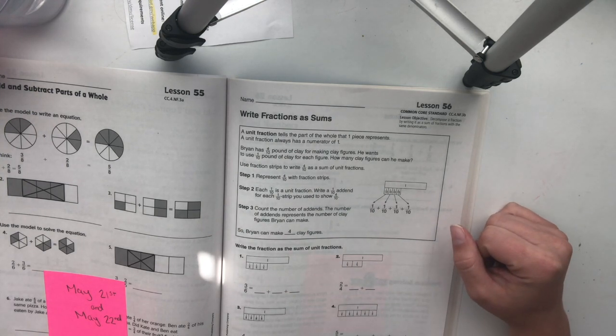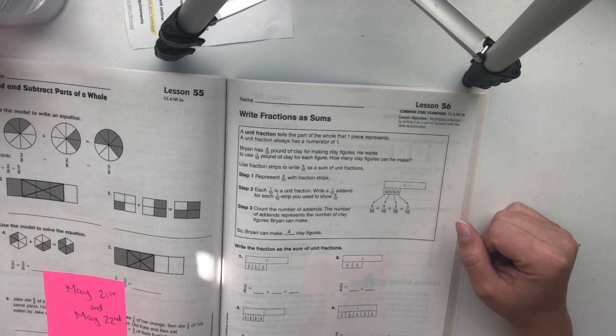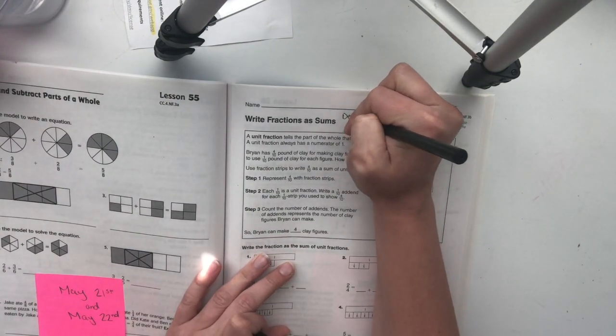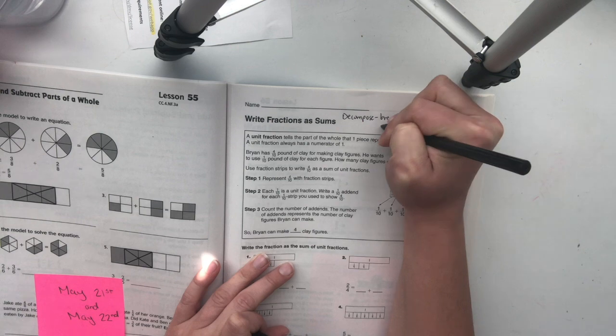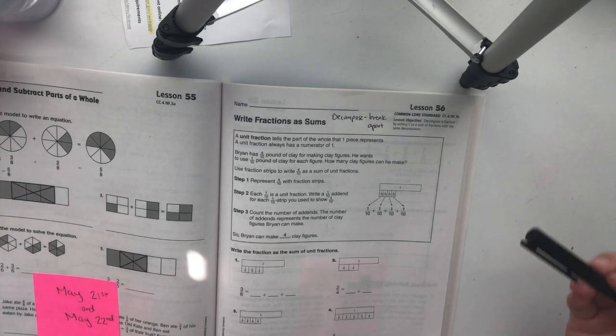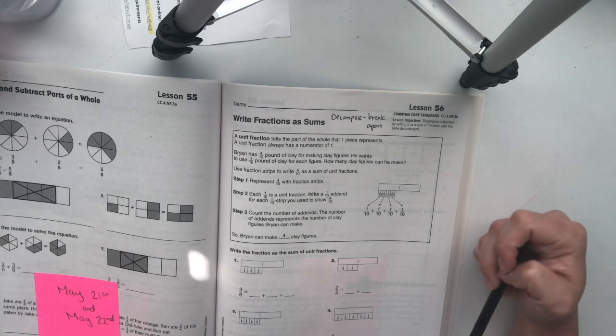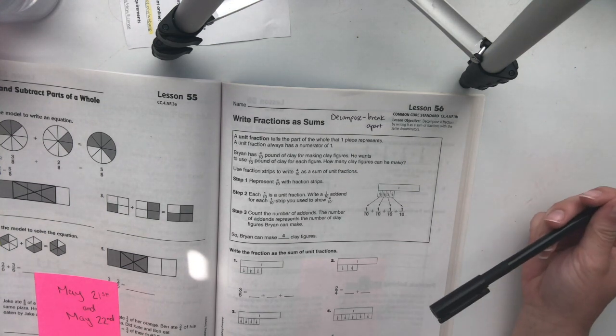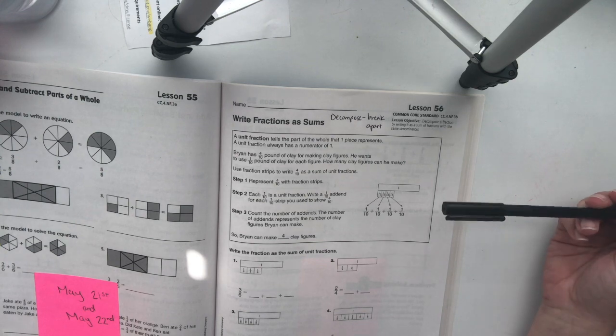So we're going to be starting learning about decomposing. And when you are decomposing something, that means that you are taking something and breaking it apart. So I'm going to write that down. Decompose, break apart. So that is really important for you to know moving forward with what we are going to be learning. So we're on lesson 56, page 111. And we are going to be decomposing fractions and we're going to be writing the sum of a fraction. And remember the sum is the addition, I mean using addition.